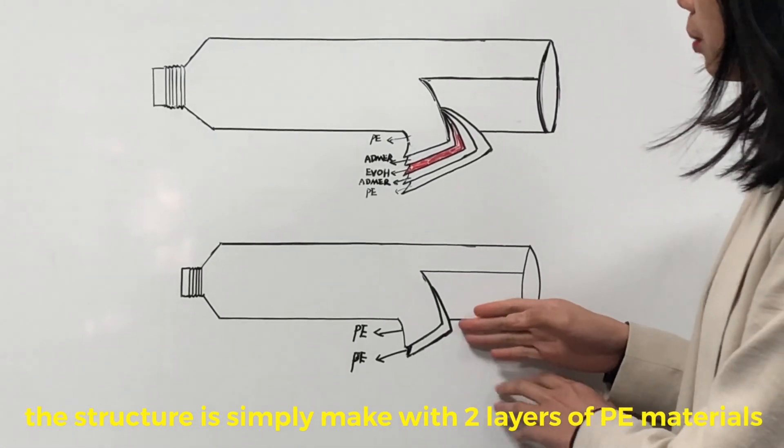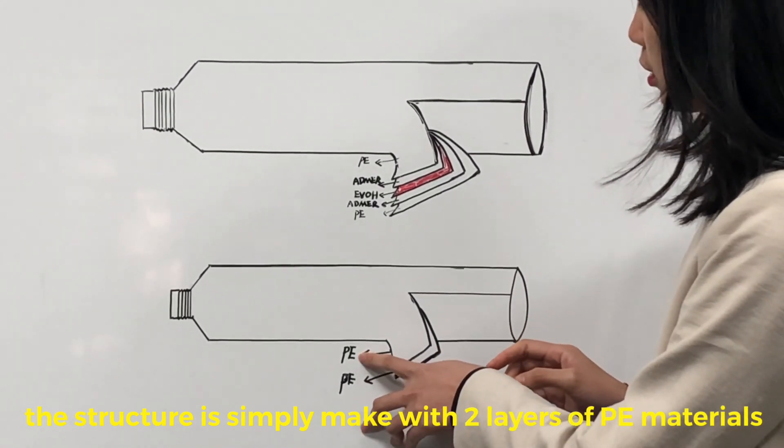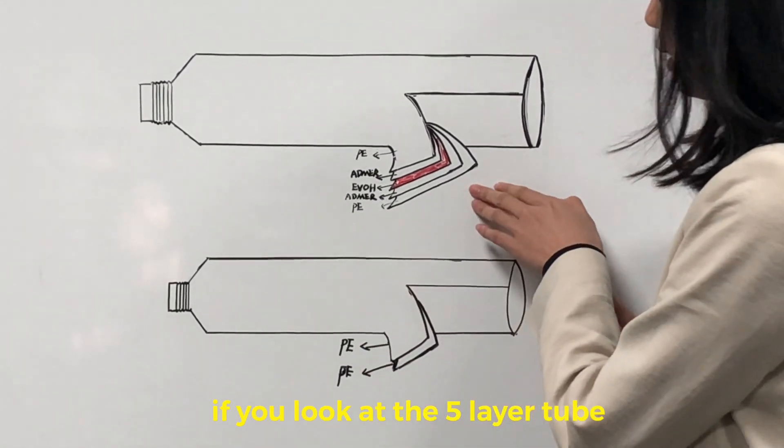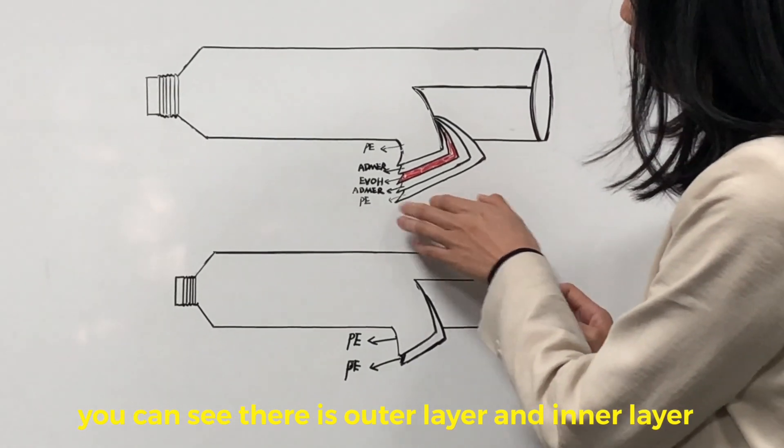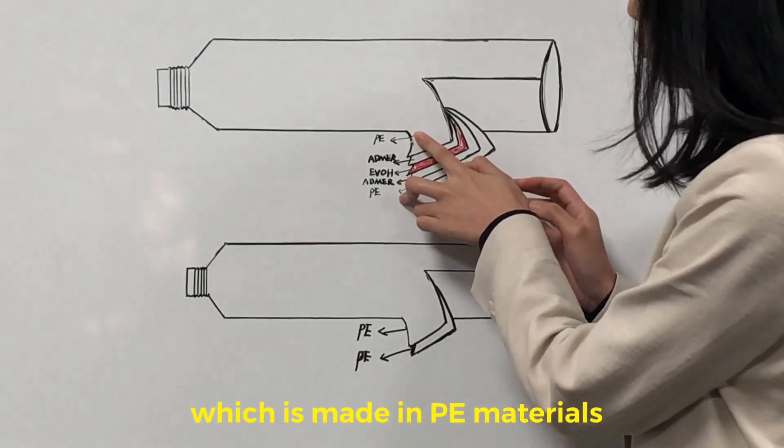The structure is simply made with two layers of PE materials. If we look at the five layer tube, you can see there is outer layer and inner layer which is made in PE materials.